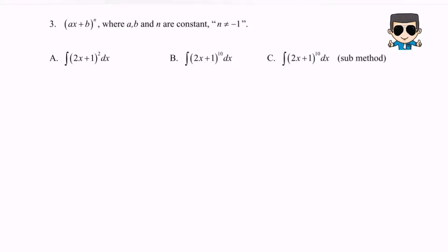Next, we will have the third situation for the basic rule or direct method, which is bracket ax plus b to the power of n, where a, b, and n are constants. Take note: n cannot be equal to negative 1. For example (a): integrate bracket 2x plus 1 to the power of 2 with respect to x.